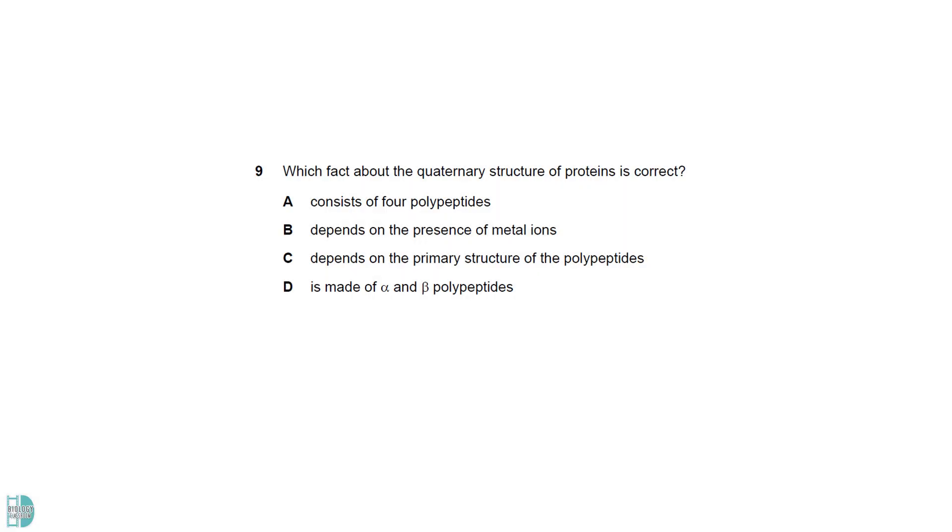A is wrong because, as long as there is more than one polypeptide, it is a quaternary structure. It does not have to be 4. B is incorrect as well. While quaternary structure can refer to a protein that associates with a non-protein component, it does not have to be a metal ion.